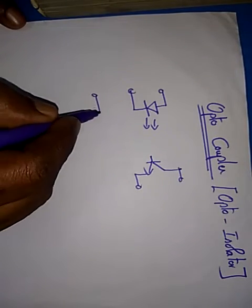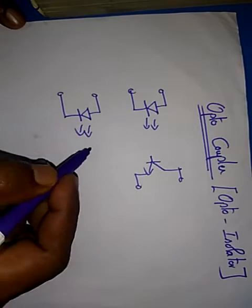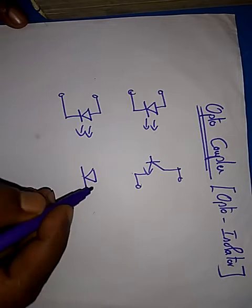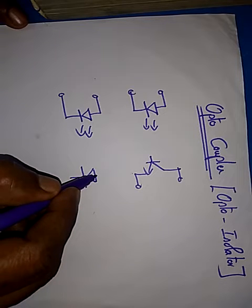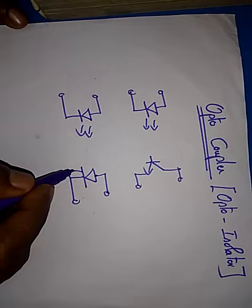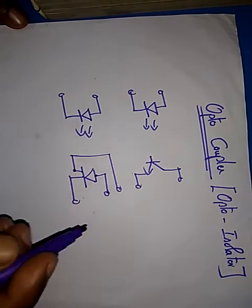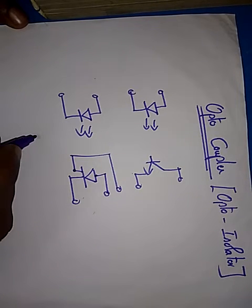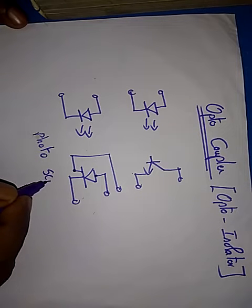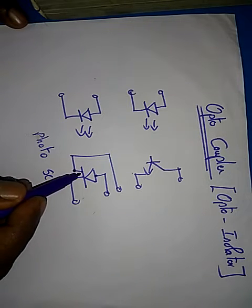Similarly, you can have an LED along with a triac or SCR. So here you have LED and this is an SCR. This is called photo thyristor. The light will go and give a gate current to the silicon control rectifier, and the SCR will go into conduction.